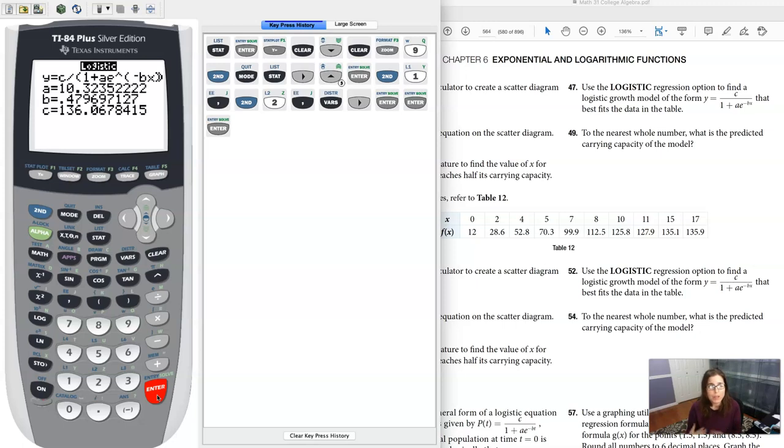But it'll pump back out my equation. And I can see my carrying capacity is about 136, that A value is about 10.3, and my B value up here is about 0.48. The negative BX was what would make it negative.